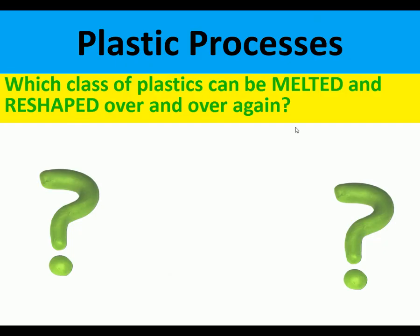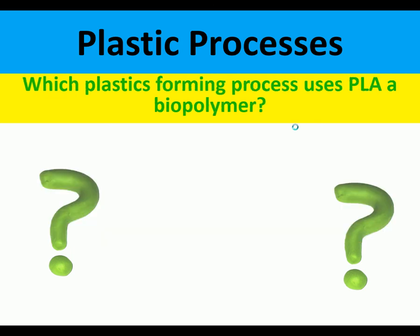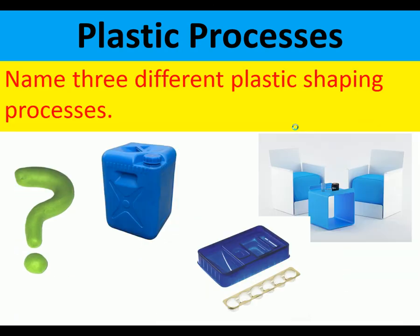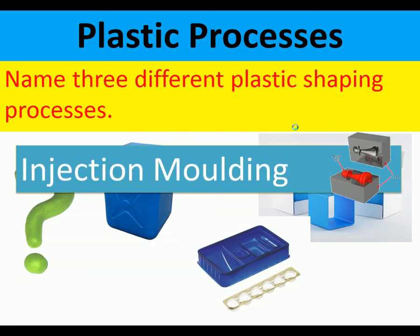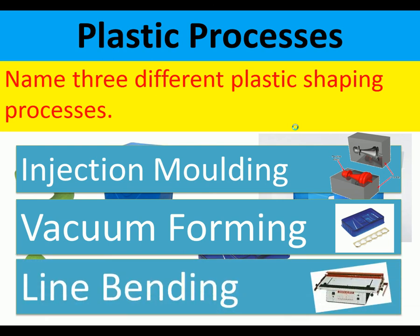Plastic processes questions. Which class of plastics can be melted and reshaped over and over again? Thermoplastics. Which plastic forming process uses PLA, which is a biopolymer? It is 3D printing. Name three different plastic shaping processes: injection moulding, vacuum forming, and line bending.